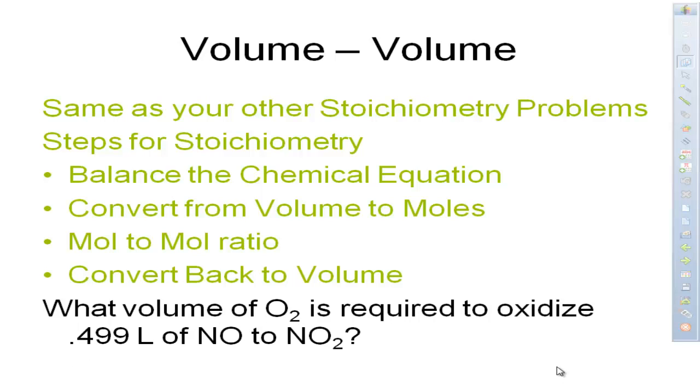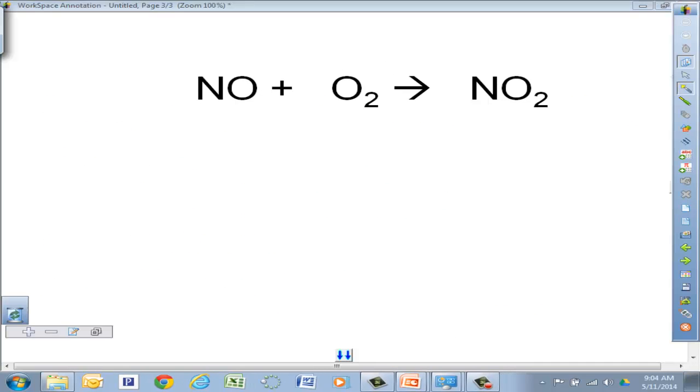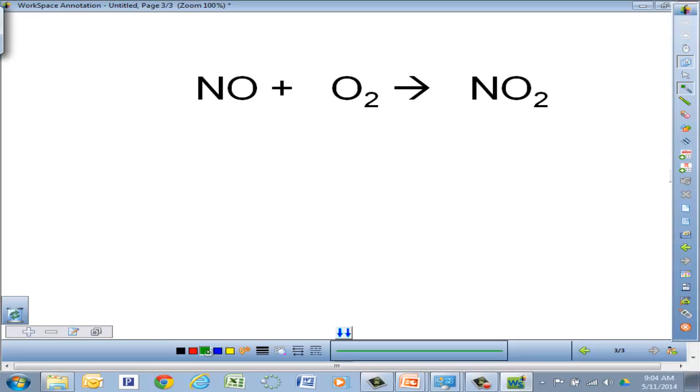So what I want you to do is find the volume of O2 that is required to oxidize 0.499 liters of nitrogen monoxide to nitrogen dioxide. So if we look at this equation, and remember what we have to do, we have to balance that chemical equation. And when we balance that chemical equation, we're going to put a 2 out in front there and a 2 out in front there.